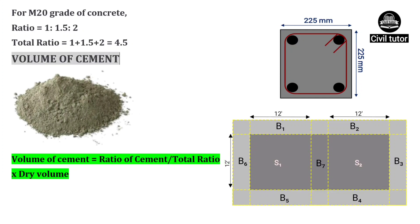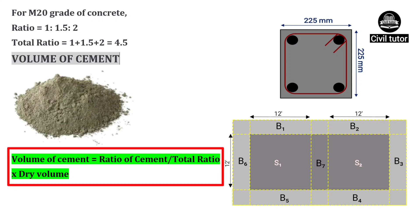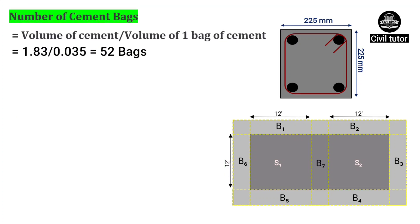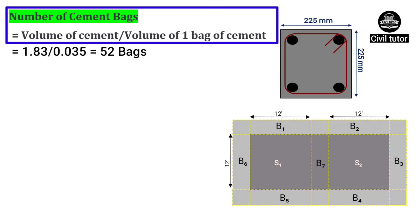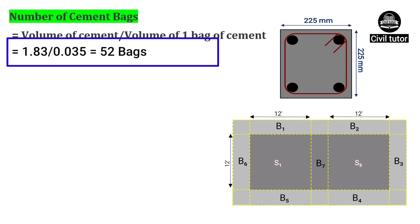Now we need to calculate the volume of cement. The formula is: volume of cement equals ratio of cement upon total ratio, into dry volume. Ratio of cement is 1, total ratio is 4.5, and dry volume is already calculated as 8.25. So on substituting these values, volume of cement will be equal to 1.83 cubic meters. The number of cement bags required are calculated by dividing volume of cement by volume of 1 bag of cement, which is 0.035 cubic meters. So the number of cement bags will be equal to 52 bags.